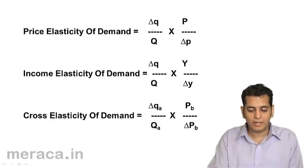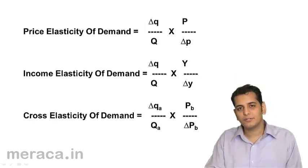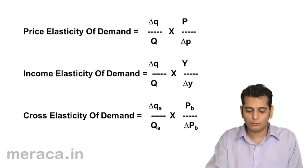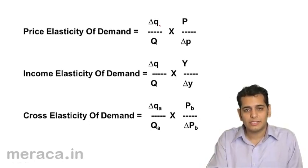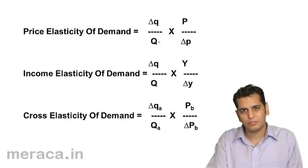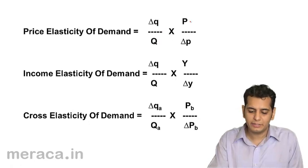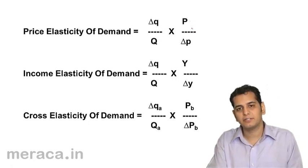Price elasticity of demand can also be calculated with this formula: change in quantity divided by original quantity, multiplied by original price divided by change in price.